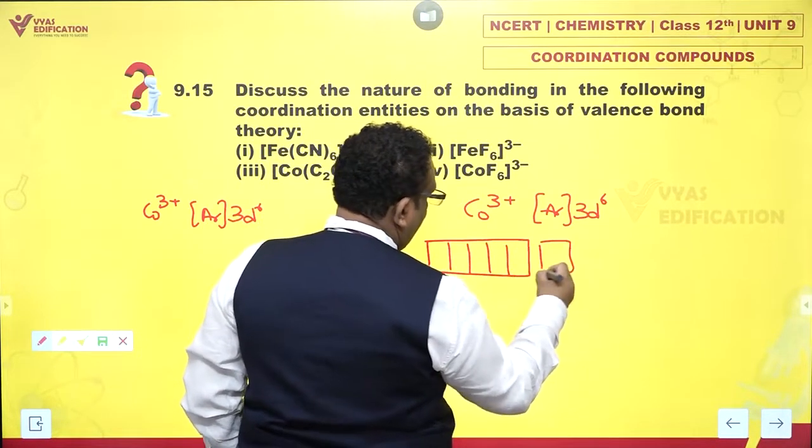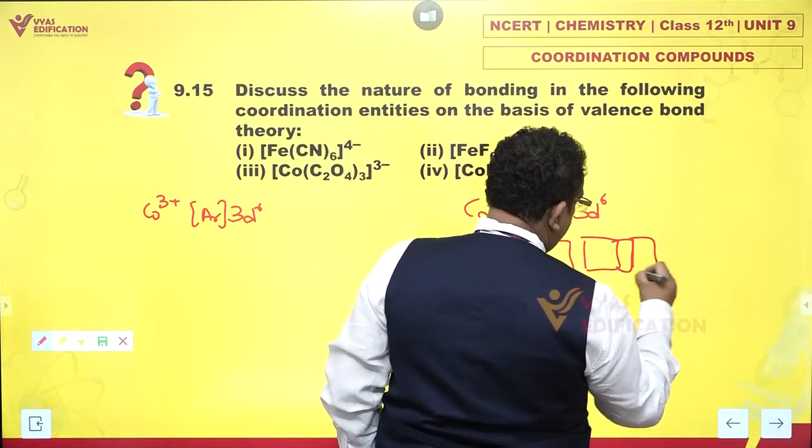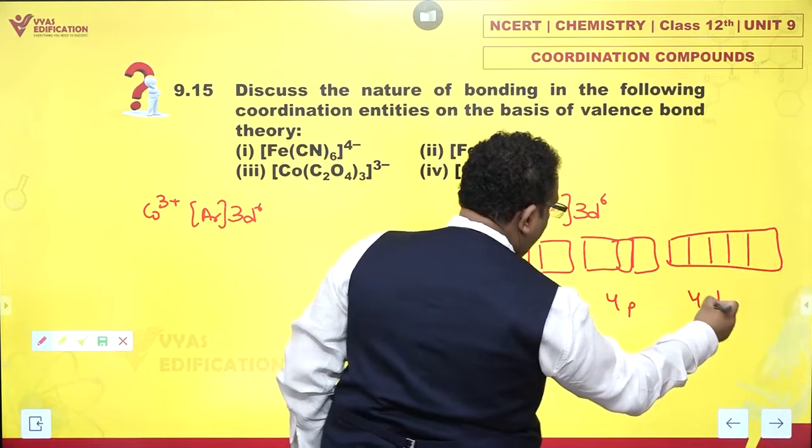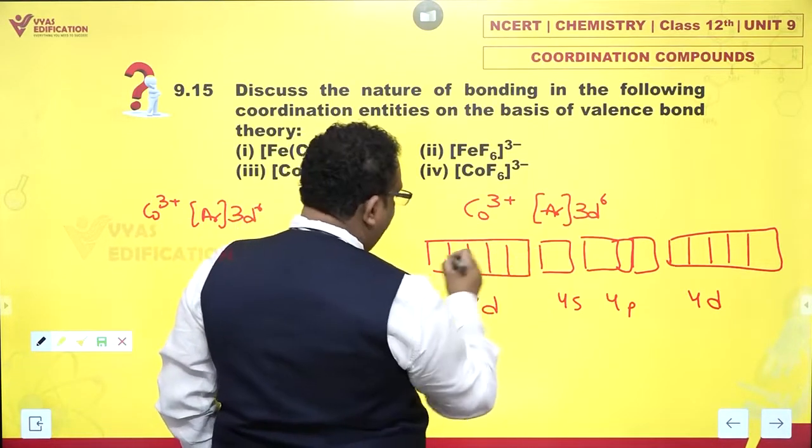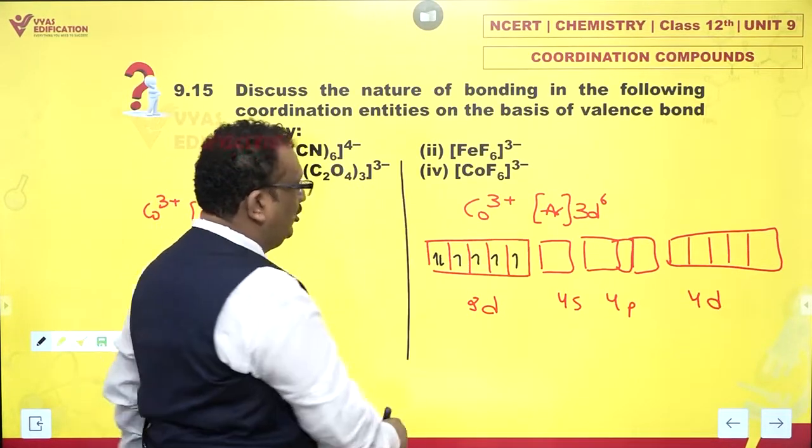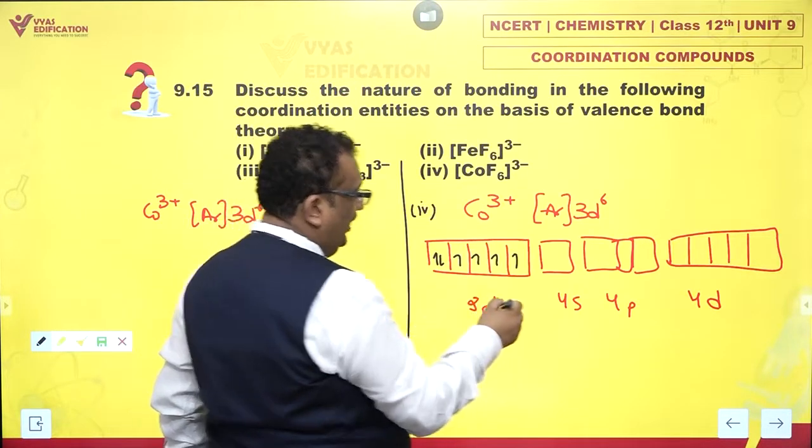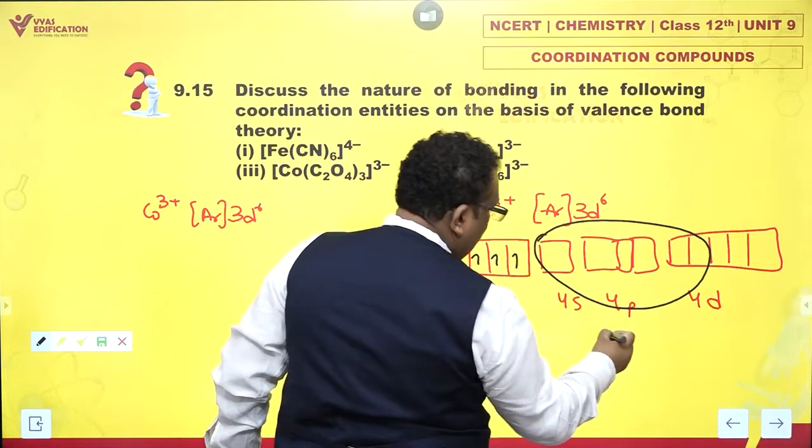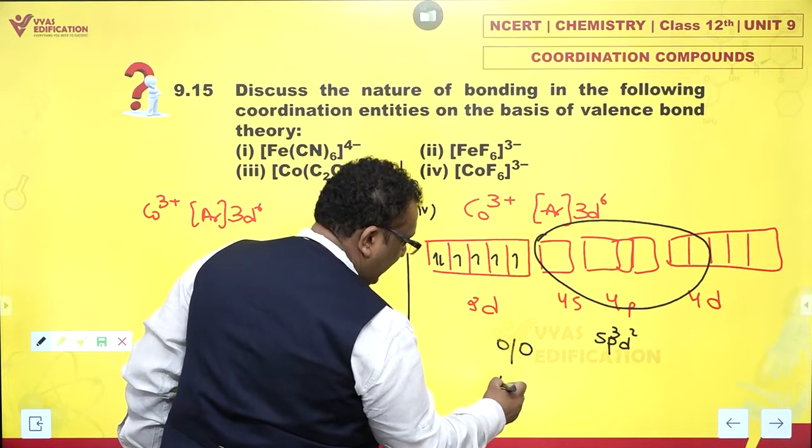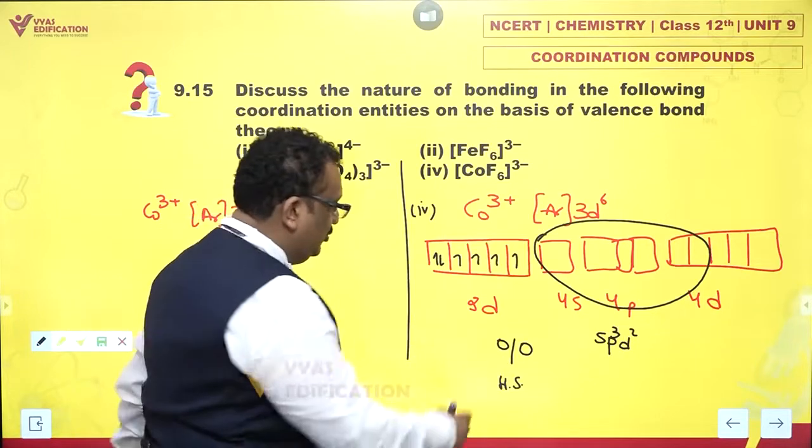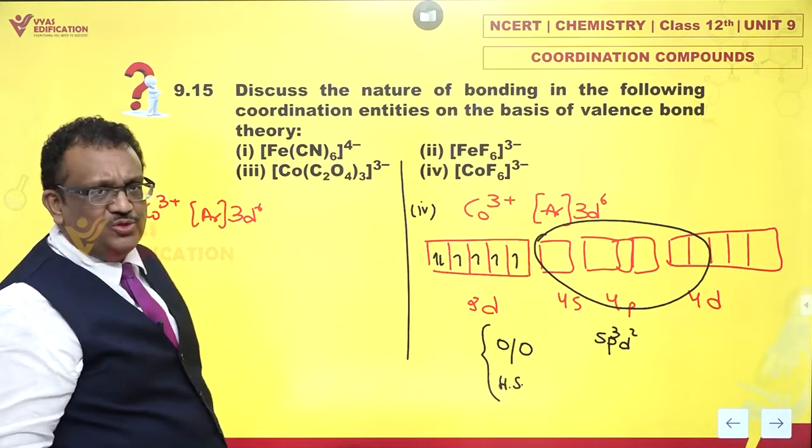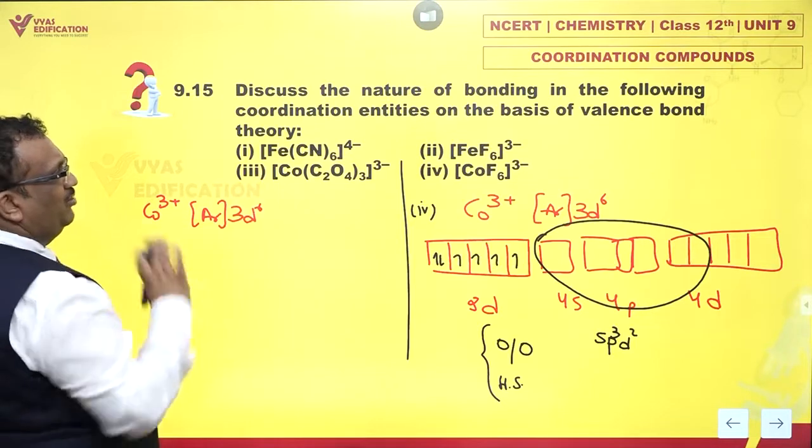But fluoride is so stupid and such a weak field ligand that although cobalt-3 is dying to pair up, fluoride ion cannot cause any pairing. If you look at the configuration: 3D, 4S, 4P, and 4D, you would discover cobaltic which is 3D6: 1, 2, 3, 4, 5, 6, like this. F- cannot cause pairing. Since they can't cause pairing, outer orbitals are being used. It is SP3D2 hybridization, outer orbital complex, and this is high spin. Geometry of course continues as octahedral for all hexacoordinate complexes.